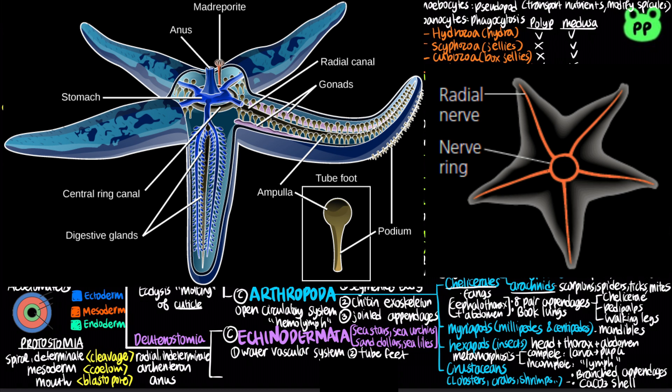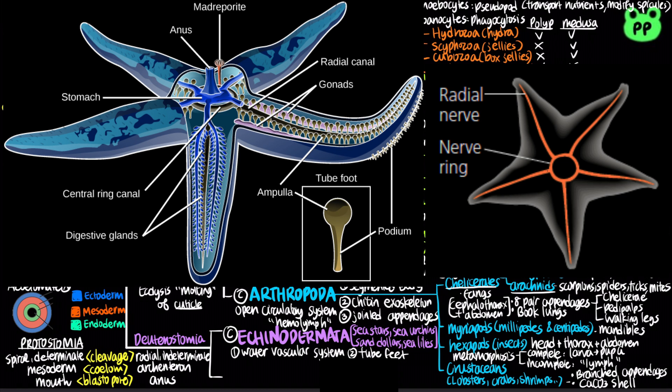Echinoderms contain a simple nervous system with nerve rings and a nerve net. Deuterostomia also includes the phylum Chordata, which includes some invertebrates and all vertebrates. The phylogeny of Chordata will be covered in a future video.